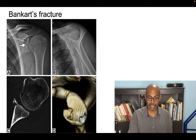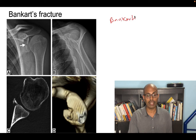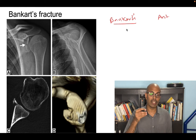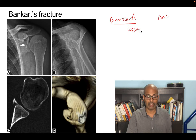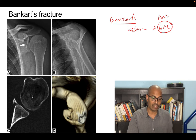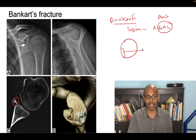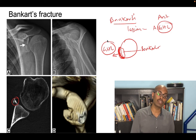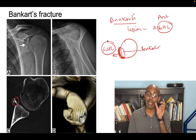The next named fracture is Bankart's fracture. The Bankart lesion is the most common type of injury in anterior shoulder dislocation — it is an injury to the antero-inferior glenohumeral ligament. The glenoid labrum is torn along with the glenohumeral ligament. However, if this dislocation is associated with a fracture of the glenoid, a piece of bone is avulsed and this is called a Bankart's fracture.